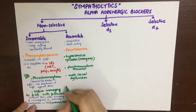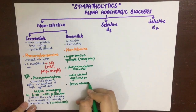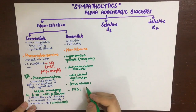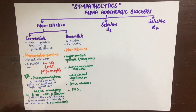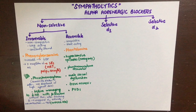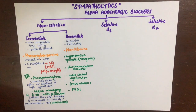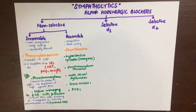Phentolamine is also used in male sexual dysfunction, where it inhibits the alpha-1 receptor and leads to vasodilation. It can be used in tissue necrosis caused by alpha-1 receptor-mediated vasoconstriction, and in peripheral vascular disease where we want to prevent alpha-1-mediated vasoconstriction from worsening the condition.